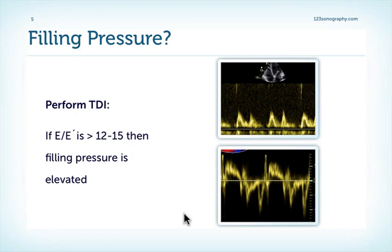If you want to know if filling pressure is normal or elevated, you can perform tissue Doppler imaging. If the E to E prime ratio is more than 12 to 15, then the patient has an elevated filling pressure.